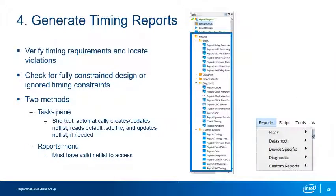Once the netlist is updated with your timing constraints, you'll be able to generate timing reports to verify your timing requirements and locate violations. Use diagnostic reports to check that your design is fully constrained or to get a report of SDC constraints and exceptions applied to the timing netlist. As a shortcut, if you've previously selected the .sdc file in step 2, you can skip steps 1 through 3 and immediately generate timing reports by double-clicking the desired report in the task pane — the netlist will be created, the .sdc file read in, and the netlist updated automatically.